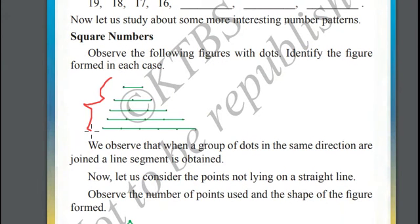Square numbers. Observe this diagram. In the first case, there are two dots. One, two, three. Connect these dots with line segment.